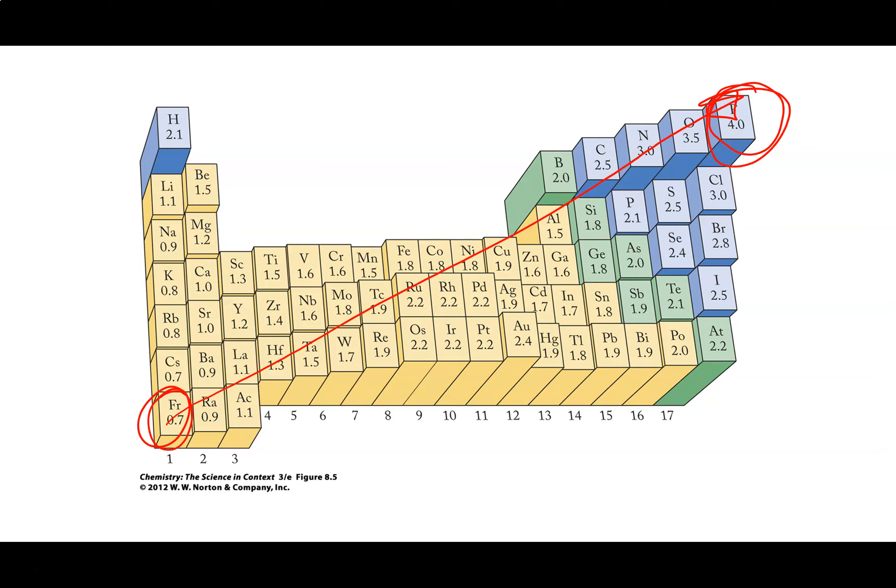Most of the elements follow the pattern nicely. You can see occasionally some of them are, it's hard to distinguish the difference between the two. Classic one being carbon and sulfur and nitrogen and chlorine having the same electronegativity values. But generally for elements that are well separated on the periodic table the differences in electronegativity are obvious.